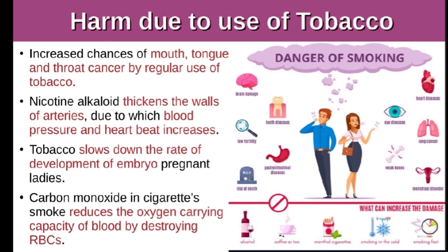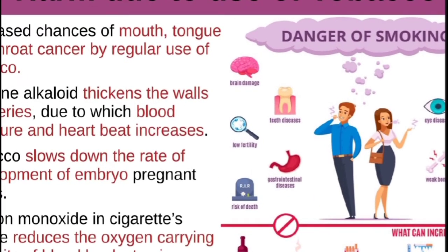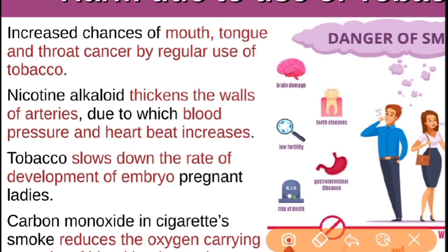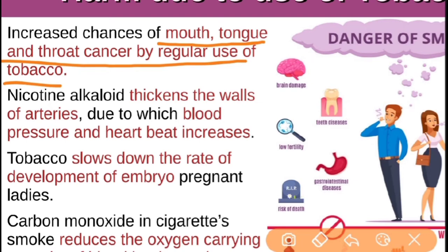The harms of tobacco use include increased chances of mouth, tongue, and throat cancer from regular use. If a person is smoking, they can also get lung cancer. Nicotine alkaloid affects our nervous system and brain. It is a stimulant alkaloid that also thickens the walls of the arteries, making them rigid and reducing their flexibility.